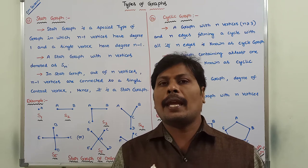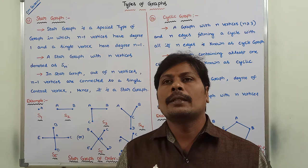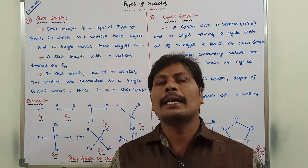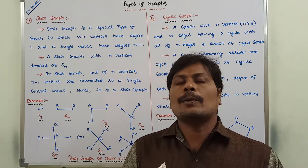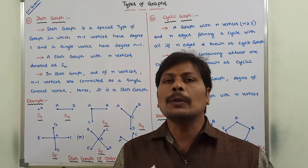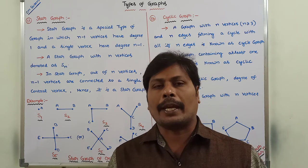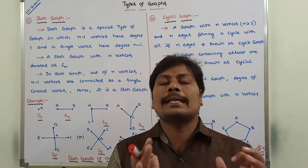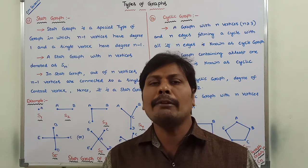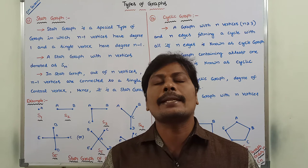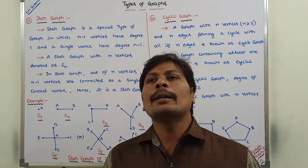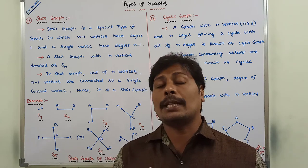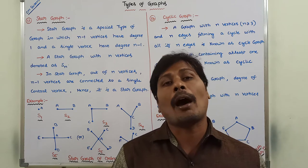Hi friends, today I am giving a lecture on two types of special graphs called star graph and cyclic graph. These are special types of graphs in graph theory. A star graph is a special type of graph in which n minus 1 vertices have degree 1, and one single vertex has degree n minus 1. That type of graph is called a star graph.